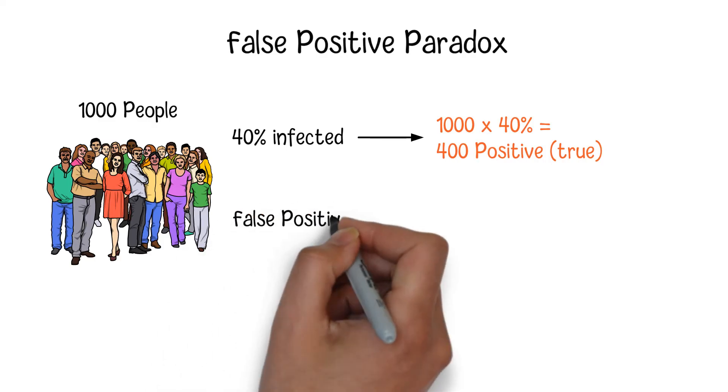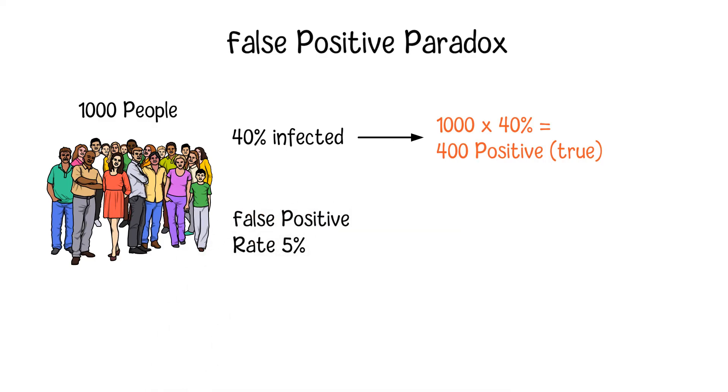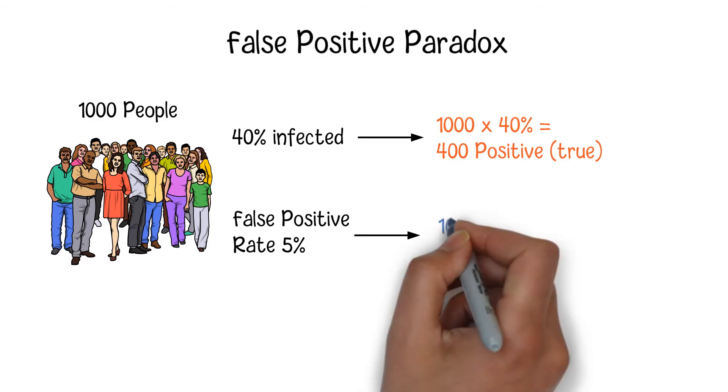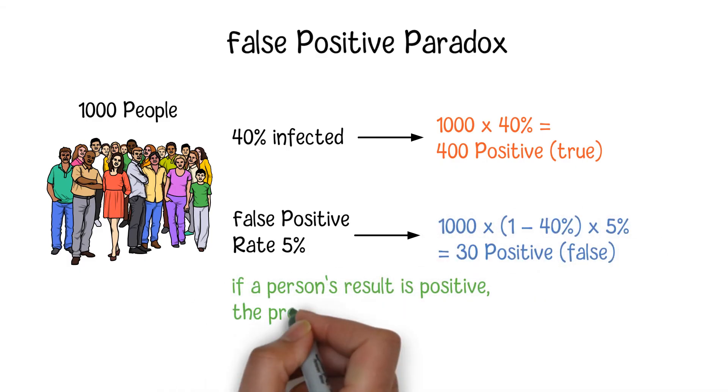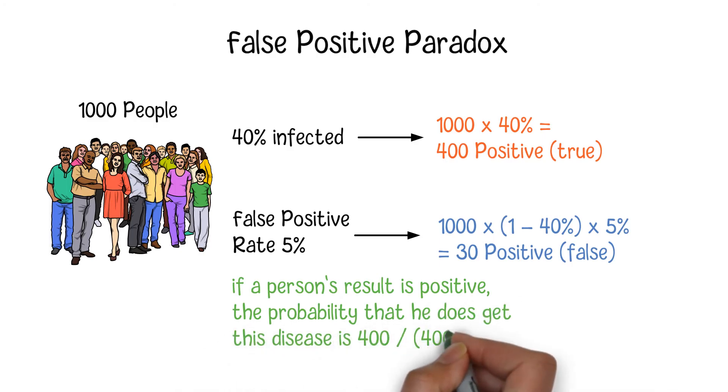Also, let's assume that the false positive rate of this method is 5%, which means that in all people who are negative, 5% of those people will still receive positive results, which is 30 people. So, if a person's result is positive, the probability that he does get this disease is 93%.